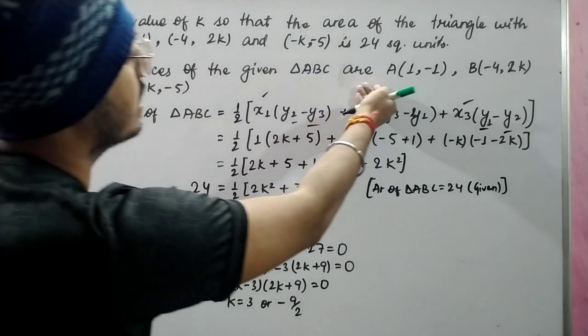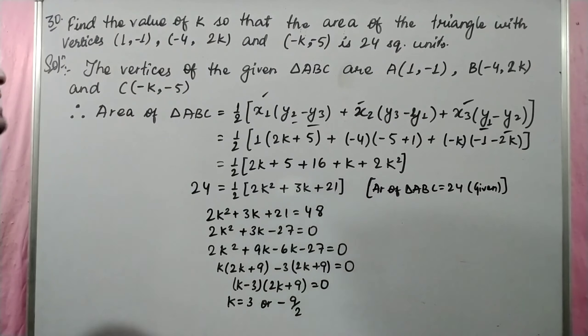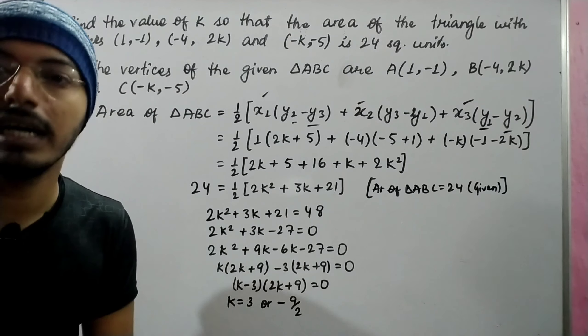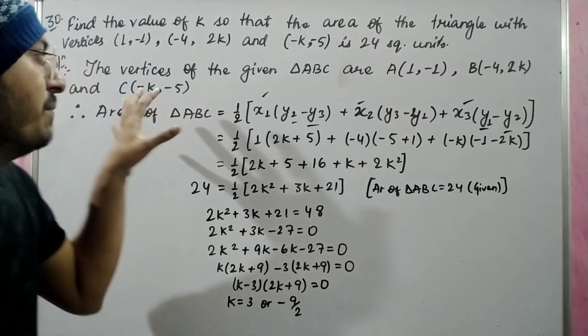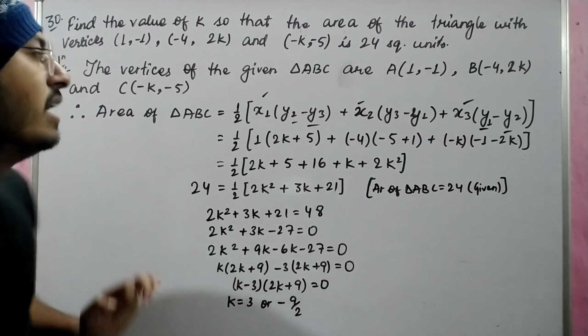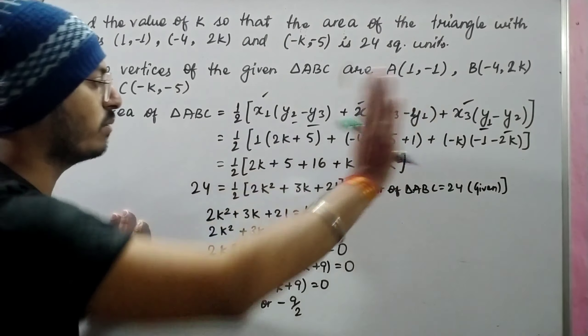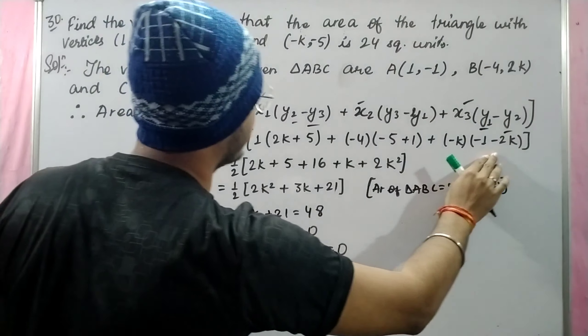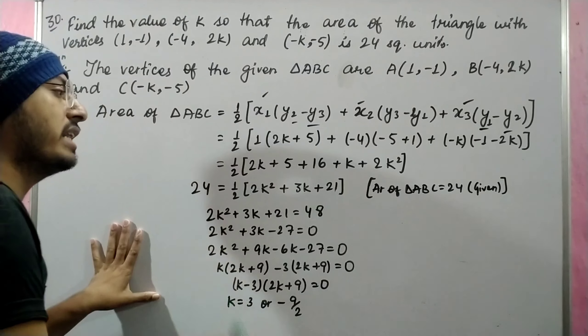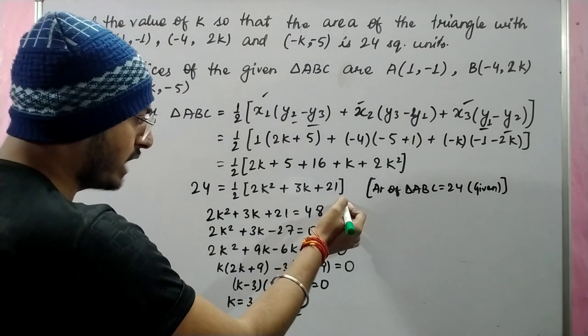The vertices of the given triangle ABC are A(1, -1), B(-4, 2k) and C(-k, -5). The area of triangle by distance formula - what do you need to keep? The values. After keeping, your quadratic equation comes in simple form.